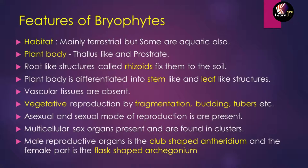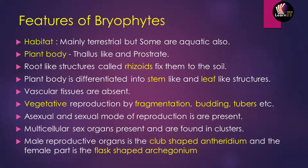Regarding vegetative reproduction, fragmentation, budding, and tubers are the kinds of vegetative reproduction in bryophytes. They also have asexual and sexual modes of reproduction. Bryophytes contain multicellular sex organs found in clusters. The male reproductive organ is club-shaped and called the antheridium, while the female part is flask-shaped and called the archegonium.